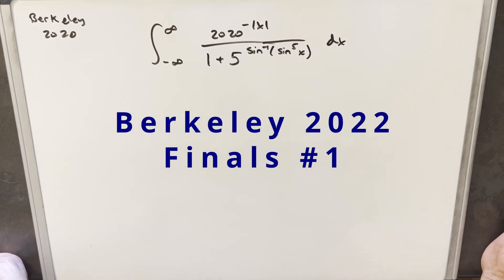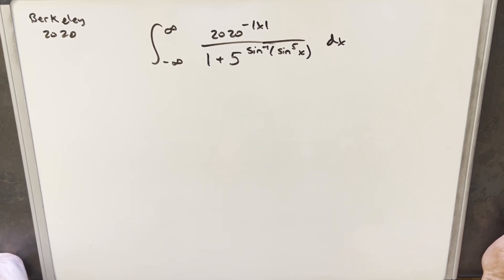Hey, we have here an integral today from the Berkeley integration Bee 2020. This is from the finals, problem number one. We have the integral from negative infinity to infinity, 2020 to the minus absolute value of x over 1 plus 5 arc sine sine of the 5th x dx.